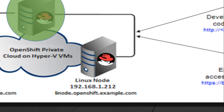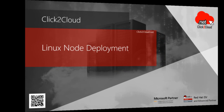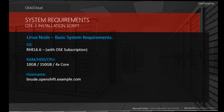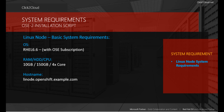The IP and the hostname for Linux node is displayed on the screen being used for demo. In order to deploy Linux node, we first need to plan for system requirements. The basic system requirements for the demonstration are RHEL 6.6 OS with OSC subscription, 10 GB RAM, 150 GB hard disk, and a 4-core processor. The hostname will be linode.openshift.example.com.